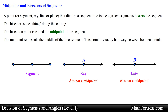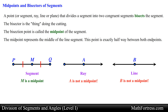For example, the midpoint of segment PQ is represented by point M. Point M is said to bisect segment PQ. This means that point M divides segment PQ into two congruent segments. We can conclude that the length of segment PM is equal to the length of segment MQ — in other words, segment PM is congruent to segment MQ.